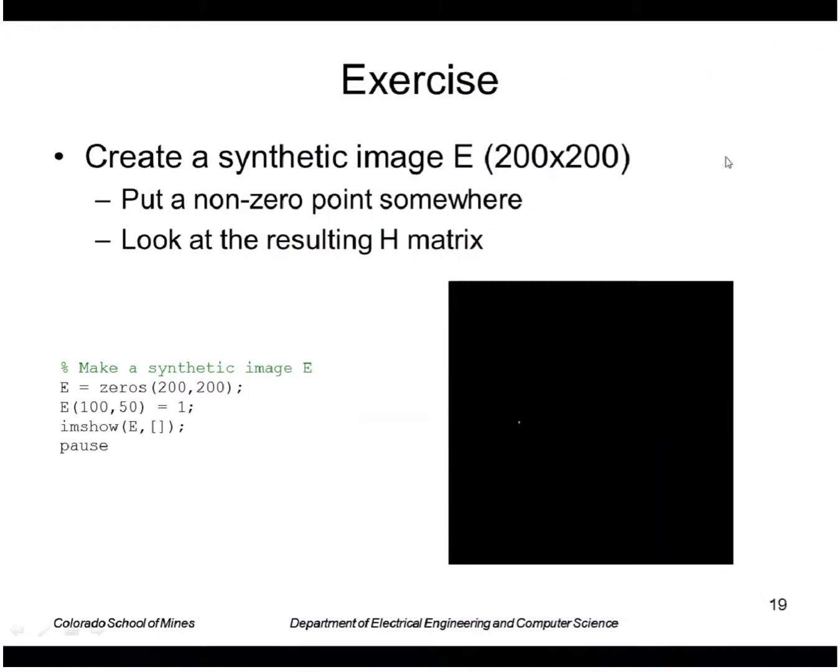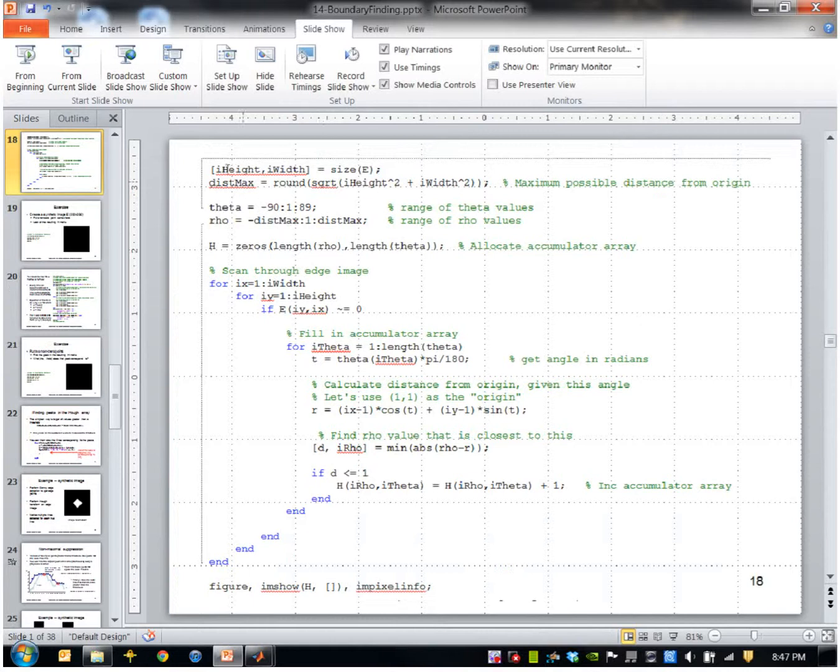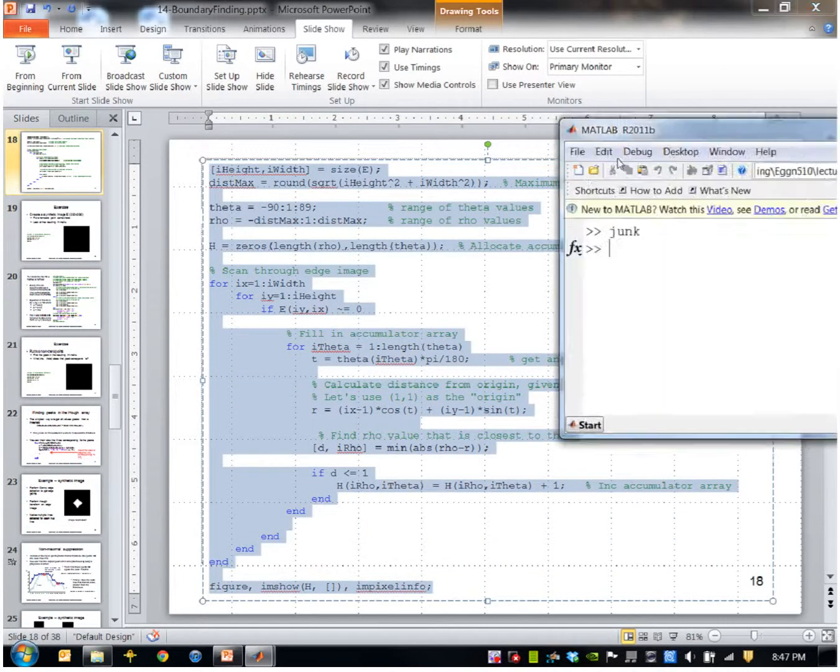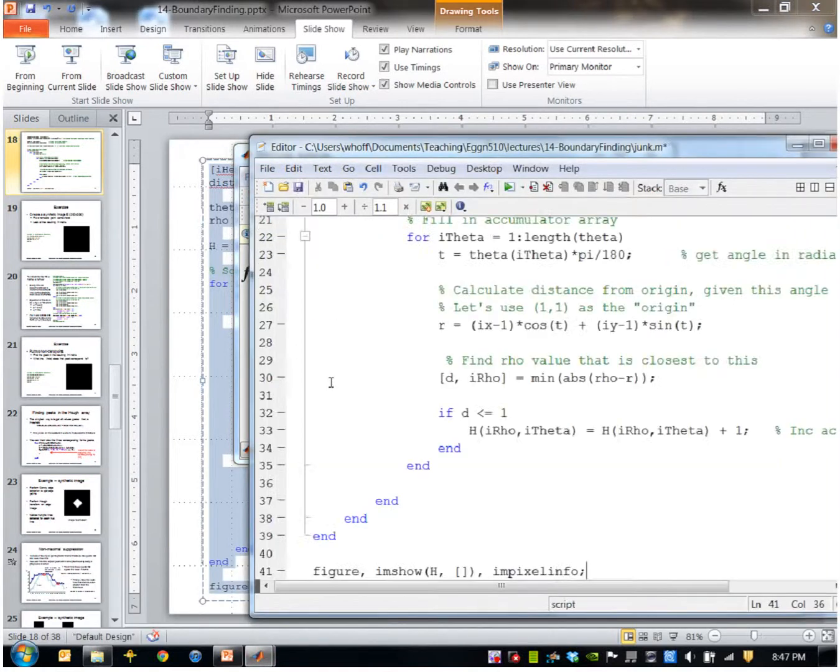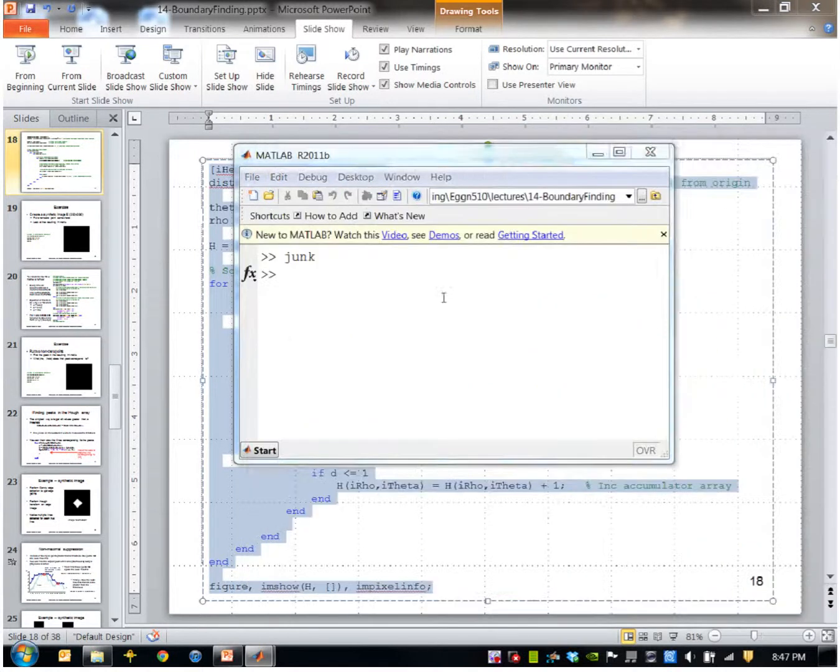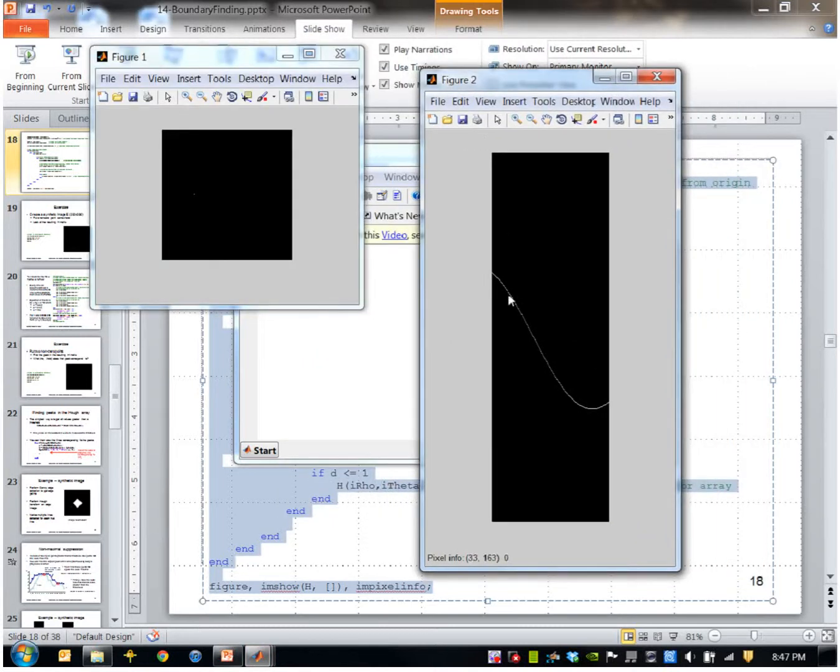So here is, I'll go ahead and I'll paste this code in there. And I'll go ahead and run that. So that creates and displays this Huff parameter space. As you can see, it has a sinusoidal curve in it.